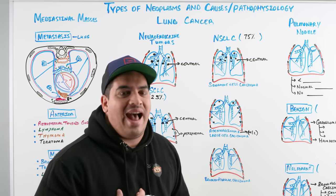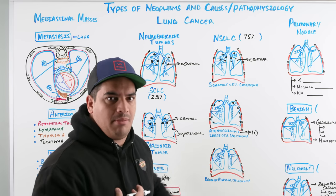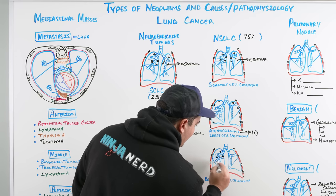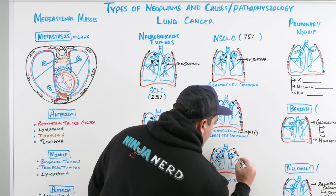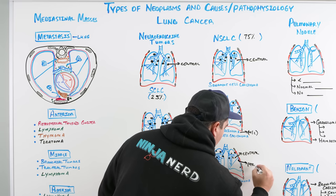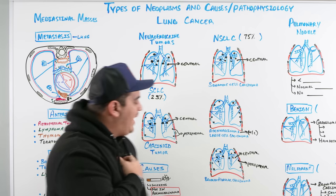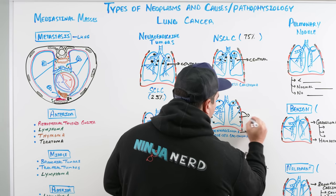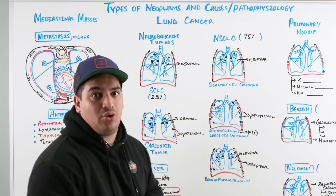Bronchoalveolar carcinoma is a subset of adenocarcinoma. The highest risk factor for this type is asbestos exposure. Like carcinoid tumor, bronchoalveolar carcinoma has a mixed location — it is mainly central but can also show peripheral involvement. So for bronchoalveolar carcinoma, you can see it both centrally and peripherally.